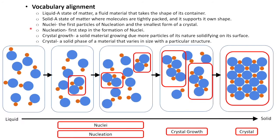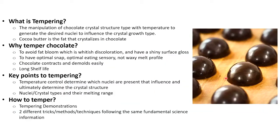First let's align on the vocabulary. A liquid is a fluid matter. A solid is molecules tightly packed that supports its own shape. The things in between are pretty important. Nuclei are the first particles that start to form a crystal. Nucleation is when multiple small particles start to form a crystal. Crystal growth is when these nuclei start to grow until they finally become one full crystal structure.